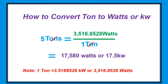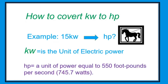How to convert ton to watts. Our example here is 5 tons. Note: one ton equals 3.516 kilowatts or 3,516 watts. 5 tons times 3,516 watts over 1 ton — we cancel the tons — giving 17,580 watts or 17.5 kilowatts.